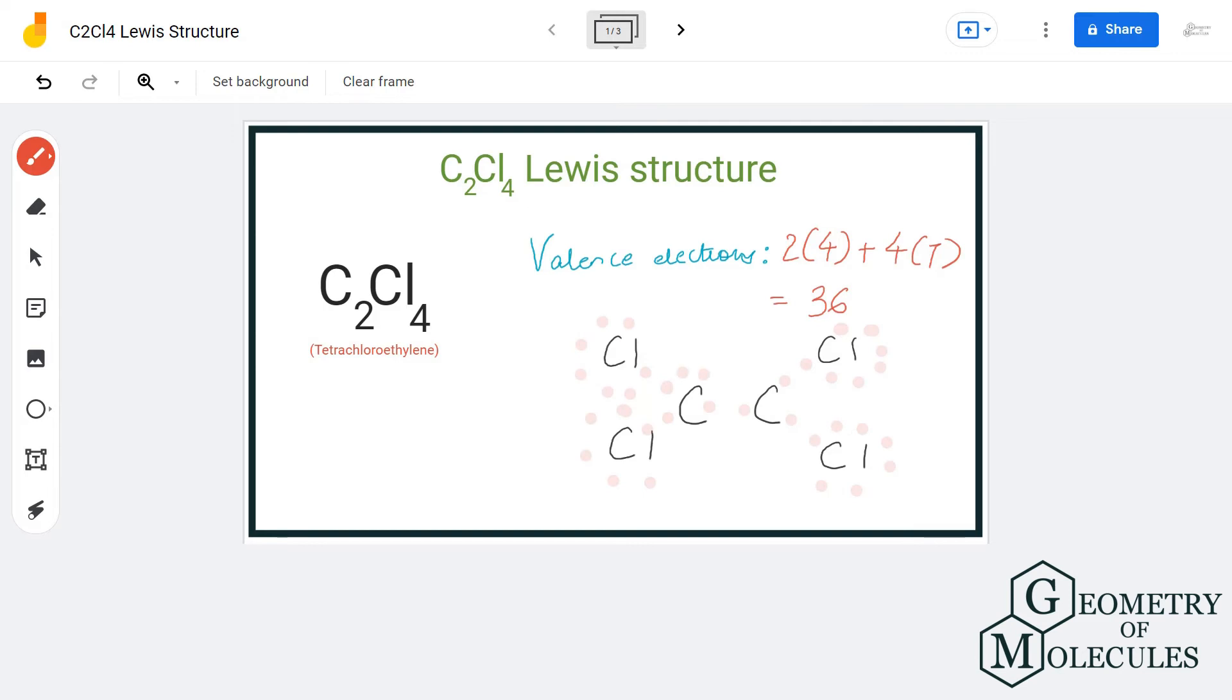The remaining two valence electrons you can place on this carbon atom because it already has six valence electrons, and adding this pair will help to complete its octet. But while you are doing that, you'll notice that this carbon atom also has only six valence electrons in its outer shell. To help this carbon atom have a complete octet, we can actually shift a pair of electrons from this carbon atom in between these two carbon atoms. Doing that will result in a formation of double bond between this carbon atom.